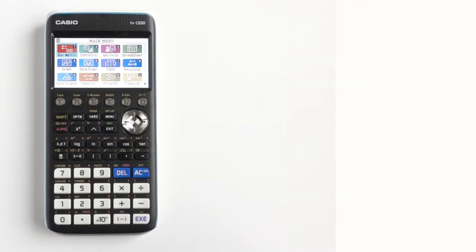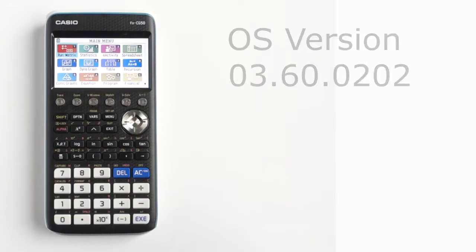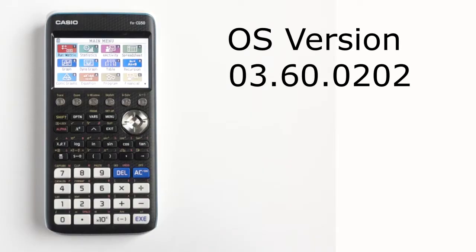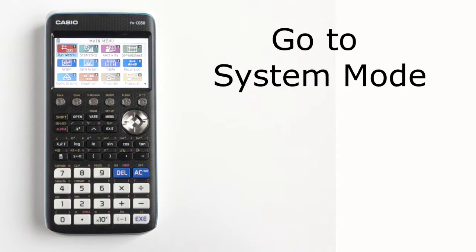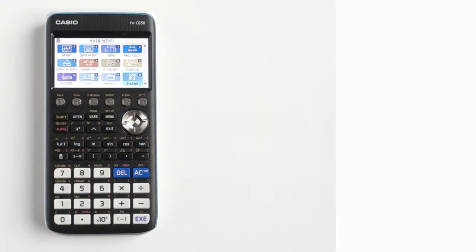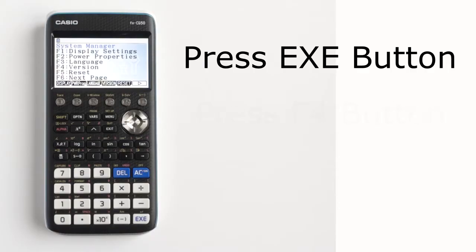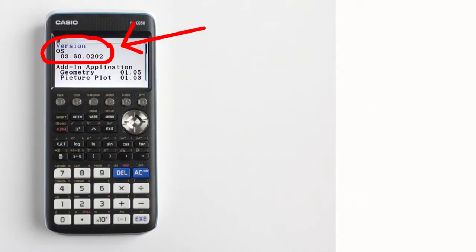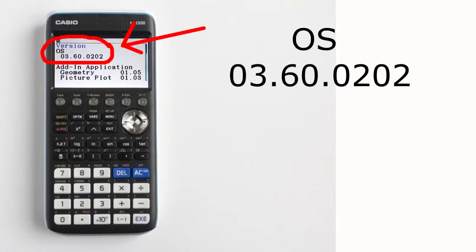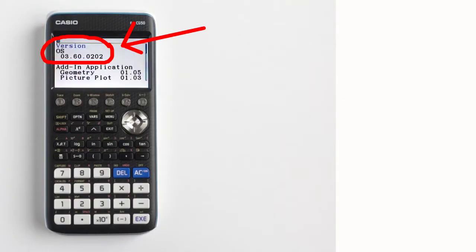If you are having trouble following the steps in this video, you need to check which operating system your Casio FX-CG50 is using. I am currently using version 03.60.0202. To check your version, scroll to the system mode, press the EXE button, go to version by pressing the F4 button, and there is my OS version 03.60.0202. To exit out of here, press the exit button, then press the menu button.